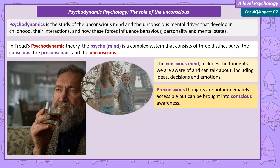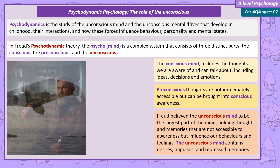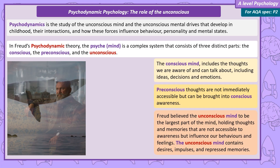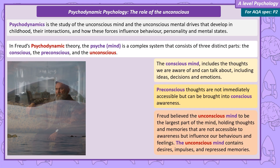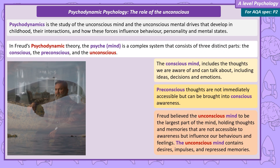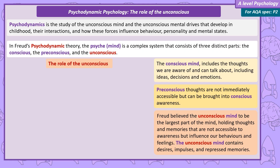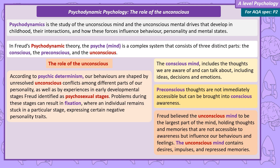Freud claimed the largest part of the mind is unconscious. The thoughts and memories in this part of the mind are not accessible to awareness, but they do influence our conscious feelings and behaviours. The conscious mind contains desires, impulses and repressed memories. So if the thoughts in this part of the mind are completely inaccessible to conscious introspection, you may be thinking: if we can't access the unconscious, what's the point of it? Well, according to Freud, the activity of the unconscious mind drives our conscious behaviour and shapes our personality.